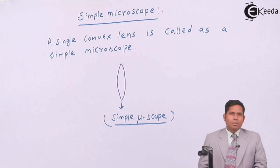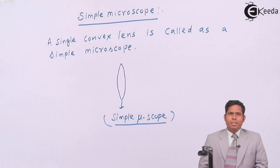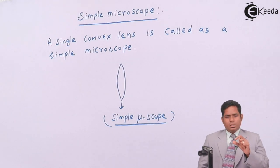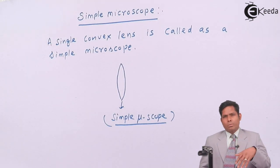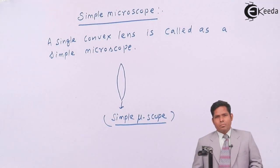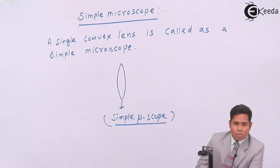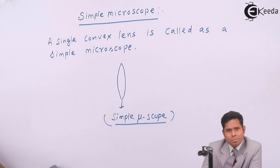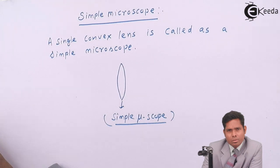What is the principle on which this simple microscope works? Basically, a microscope is used to magnify the size of the object. That means if you see the object through the lens, the image formed is magnified — the object's size appears increased when you see through the lens. The condition for magnification is when the microscope produces a magnified image.